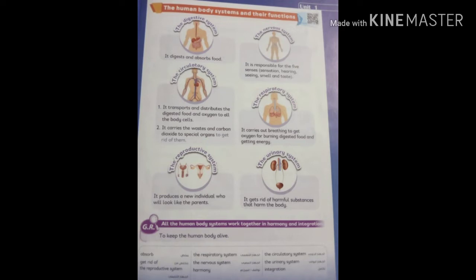Now we will study the systems of the human body. There are six systems: number one, digestive system; number two, respiratory system; number three, circulatory system; number four, urinary system; number five, nervous system; number six, reproductive system.